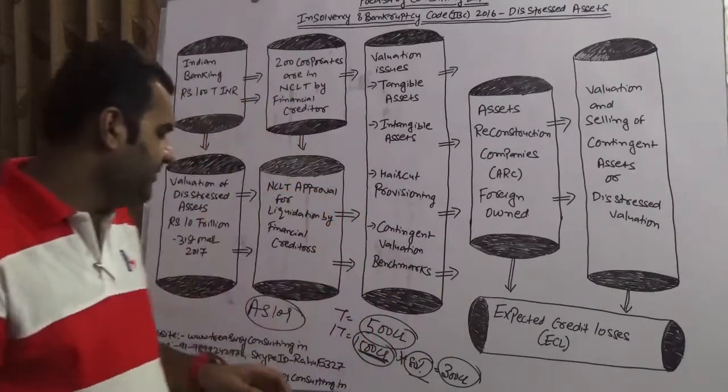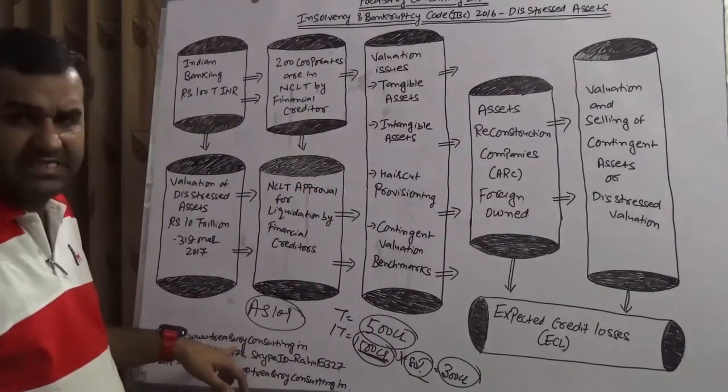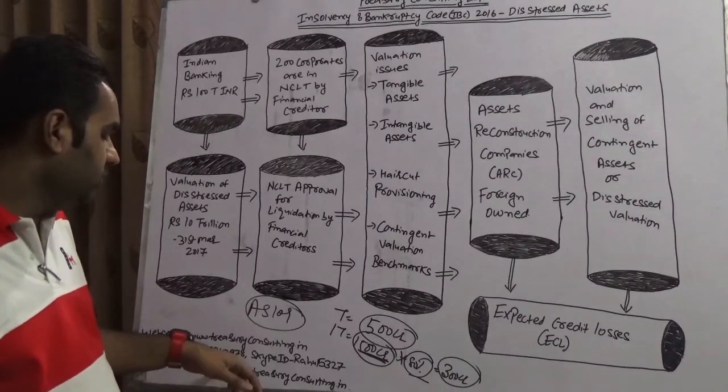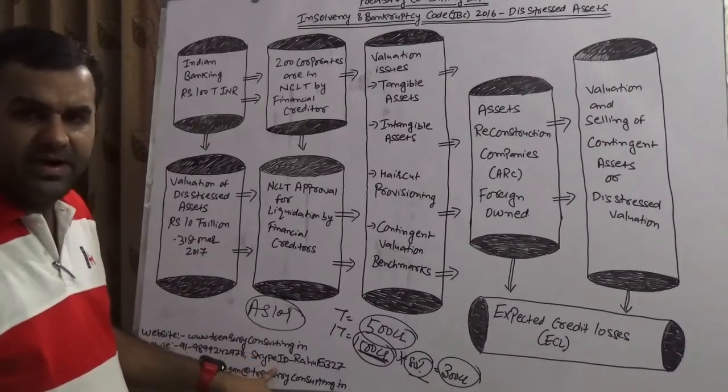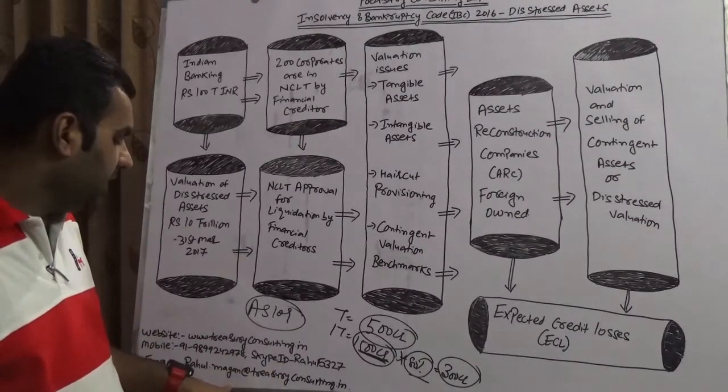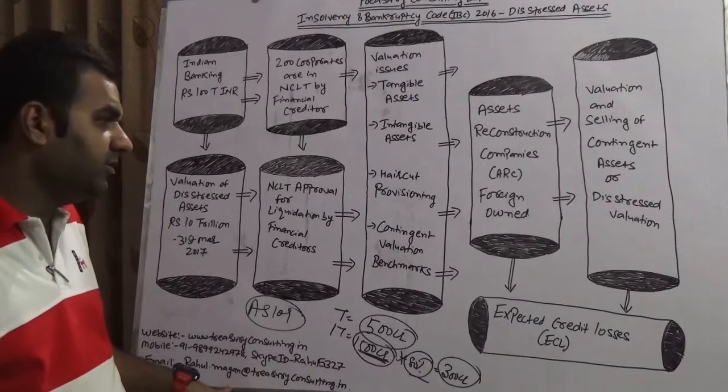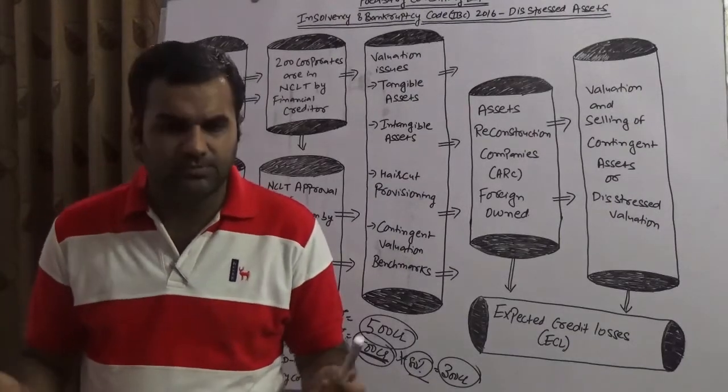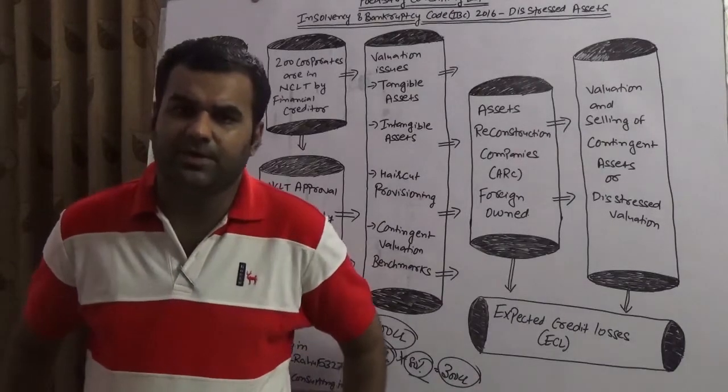my website is www.treasuryconsulting.in. My mobile number is 98-N-242-978. My Skype ID is Rahul5327. My email is rahul.magan@treasuryconsulting.in. In case you have any requirement, do come to us. You are most welcome. Thank you and have a wonderful time ahead.